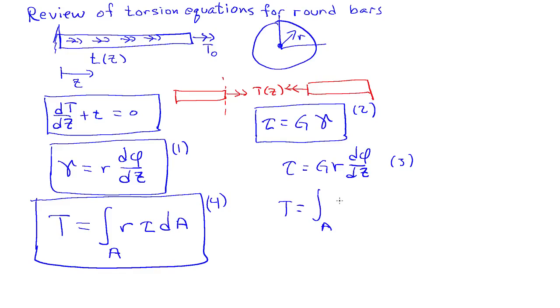And now if I substitute relation 3 here into relation 4, what I'll find is that T is equal to the integral over the cross sectional area of gr squared dA d phi dz. And I get to pull the d phi dz out from underneath the integral sign because phi is only a function of z and not in terms of r or theta, the polar coordinates on the cross section.